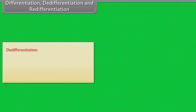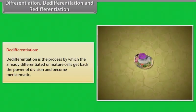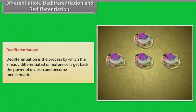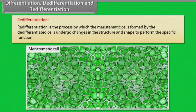De-differentiation is the process by which the already differentiated or mature cells get back the power of division and become meristematic. Redifferentiation is the process by which the meristematic cells formed by de-differentiated cells undergo changes in the structure and shape to perform the specific function.